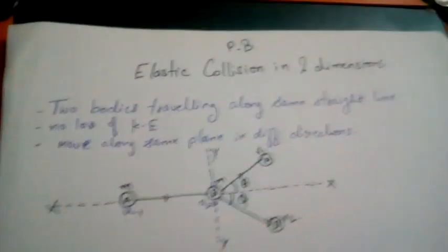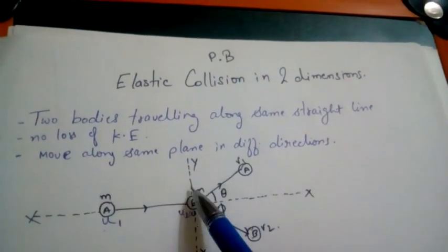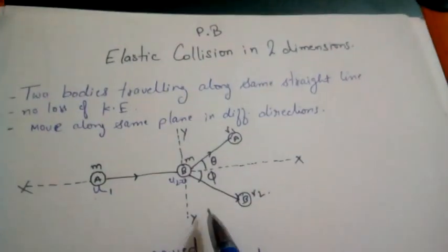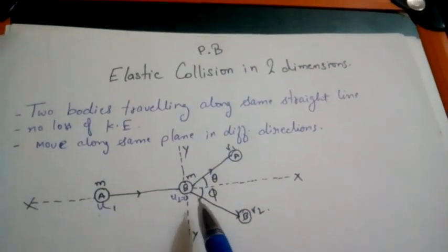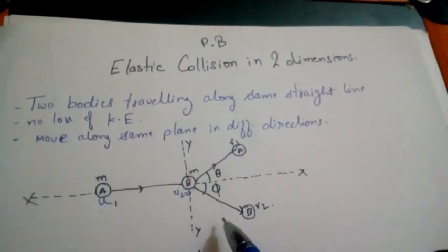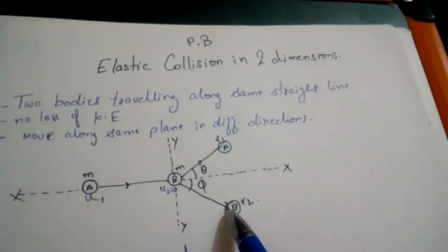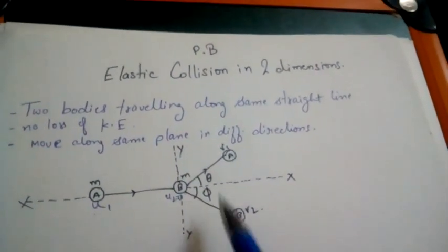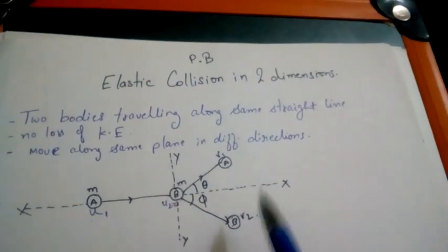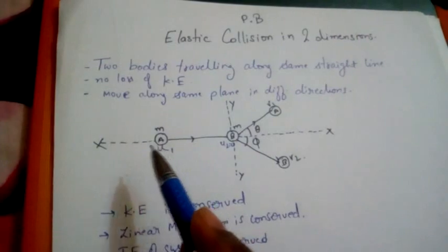Along the y-axis, the momentum after collision is m·v1·sinθ minus m·v2·sinφ. The minus sign is because v1 acts along the positive y-axis and v2 acts along the negative y-axis. Before the collision there was no momentum along the y-axis, so this equals zero. This gives Equation 3: v1·sinθ = v2·sinφ.